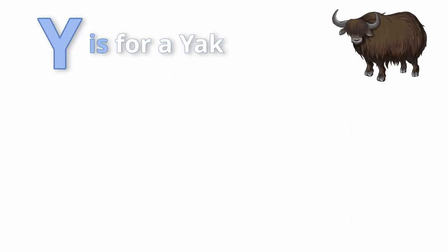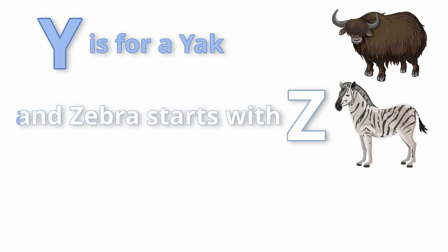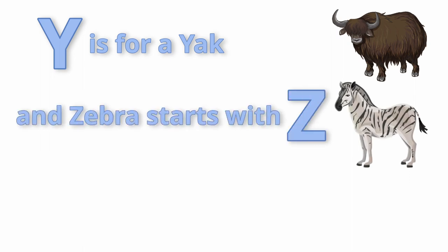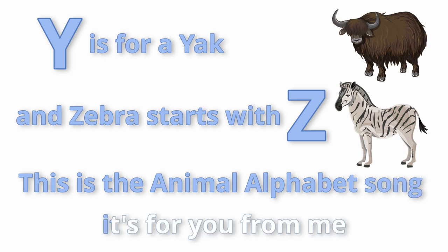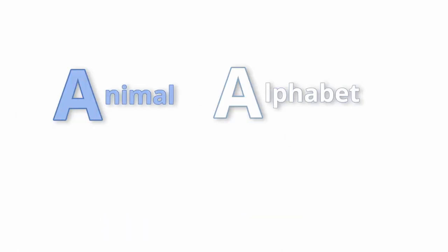Y is for a yak. And zebra starts with Z. This is the animal alphabet song. It's for you from me.